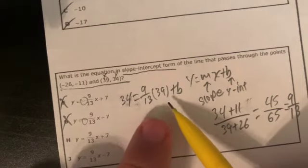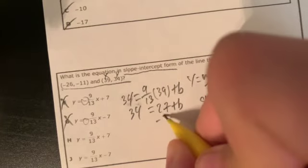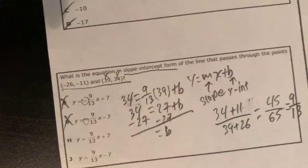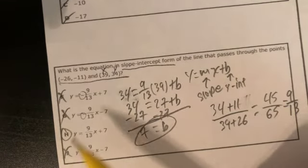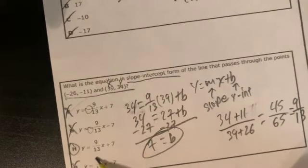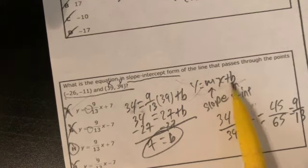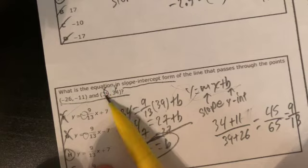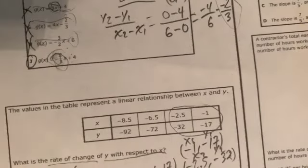Now we need to find whether the y-intercept is 7 or negative 7. We plug in one of our coordinates. Using the point (39, 34): y equals 9 over 13 times x plus b, so 34 equals 9 over 13 times 39, which equals 27, plus b. Then 34 minus 27 gives b equals 7. So our answer is H.